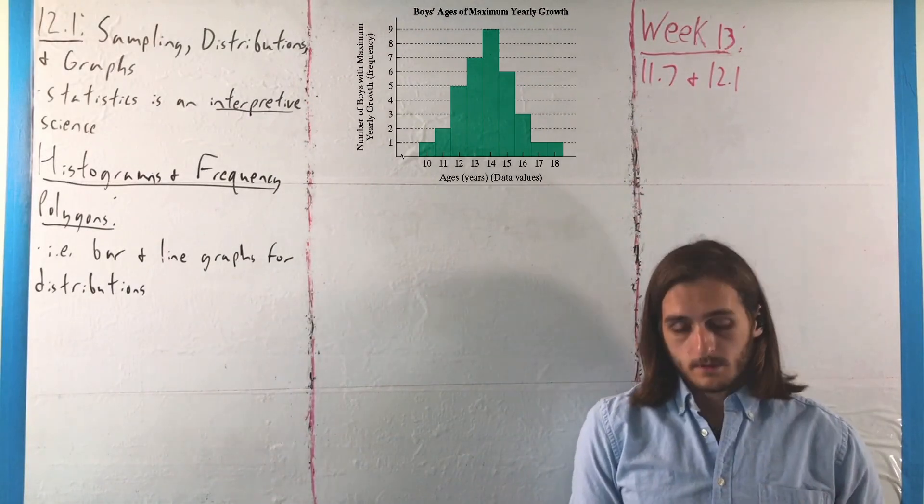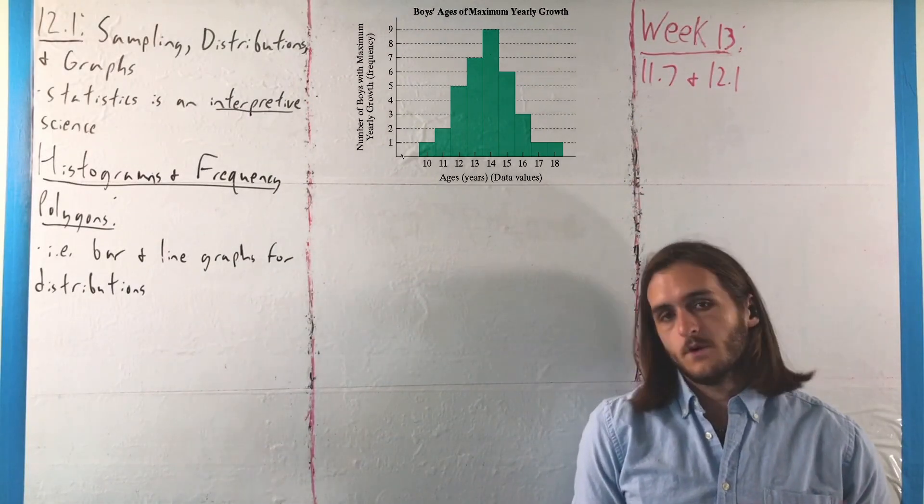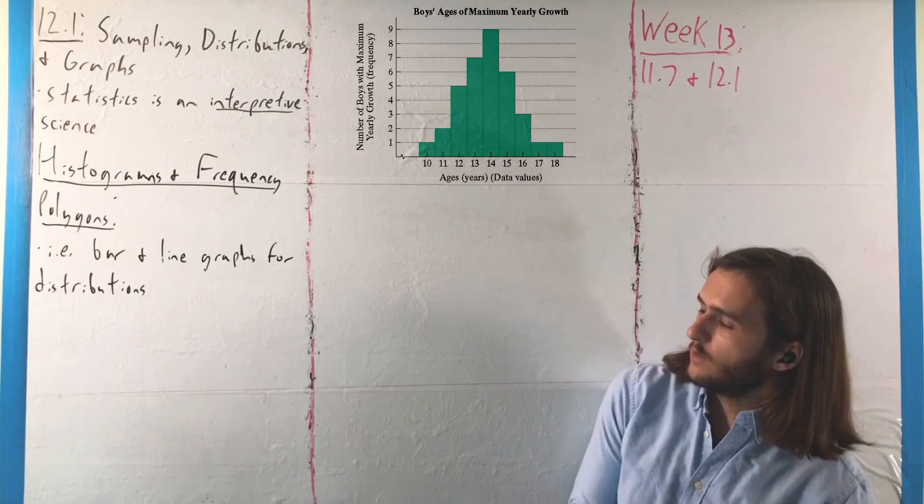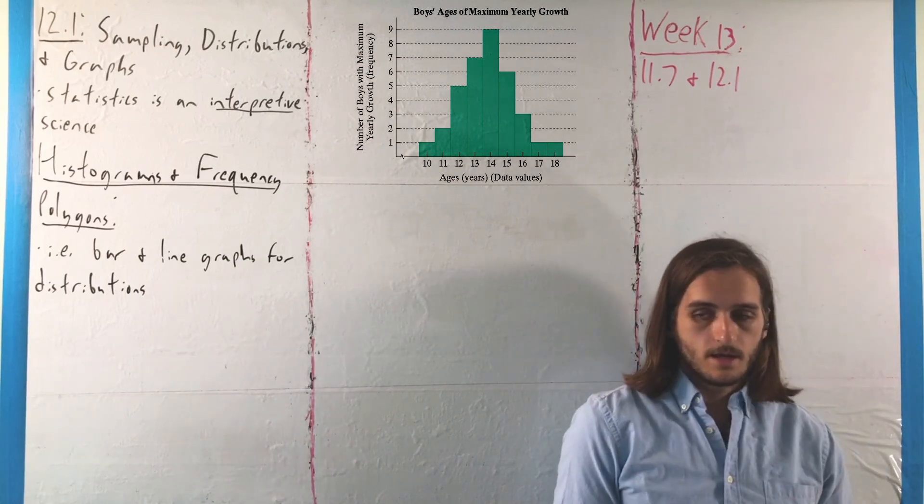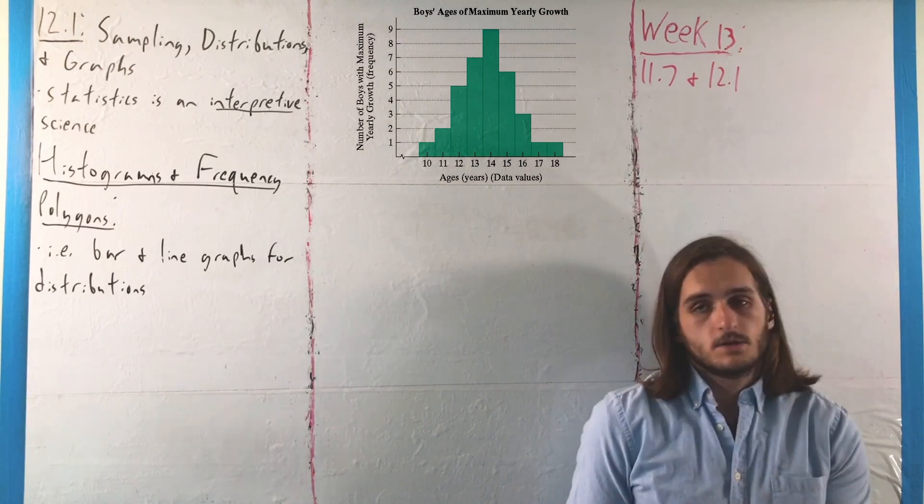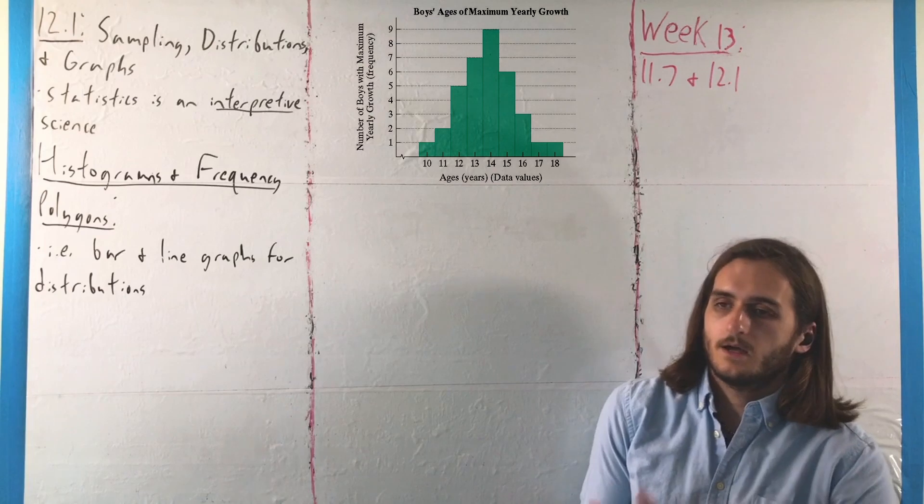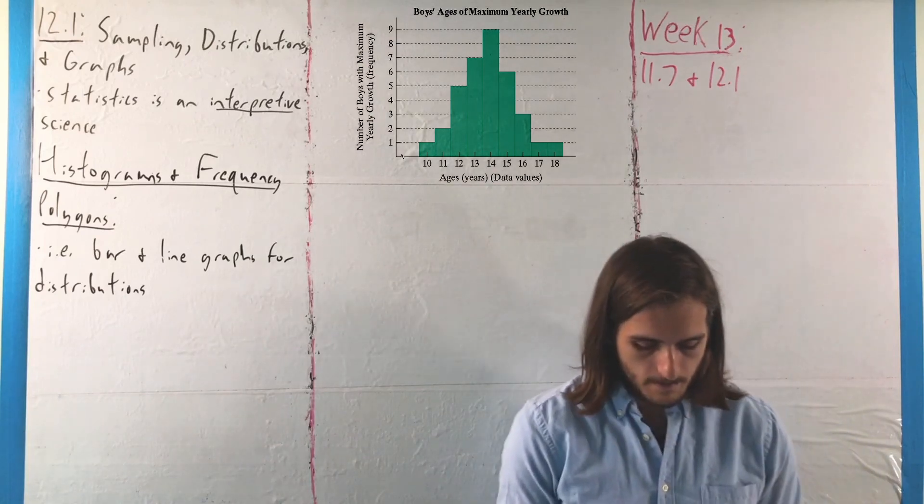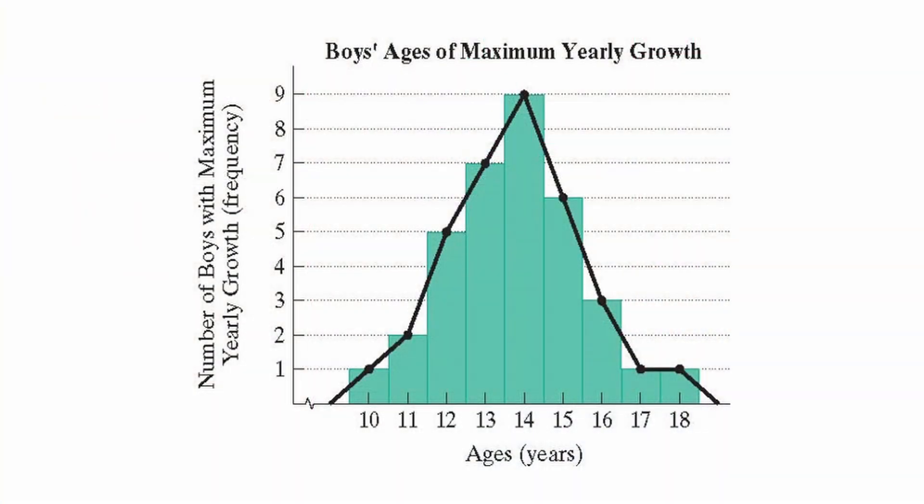Similarly, for a frequency polygon, we essentially form a line graph by connecting the dots at the midpoint of each of the classes, or in the middle of each of the tops of the histograms, because usually you make a frequency polygon given a histogram, where we would do something like this to our data set, to our histogram that we just saw.